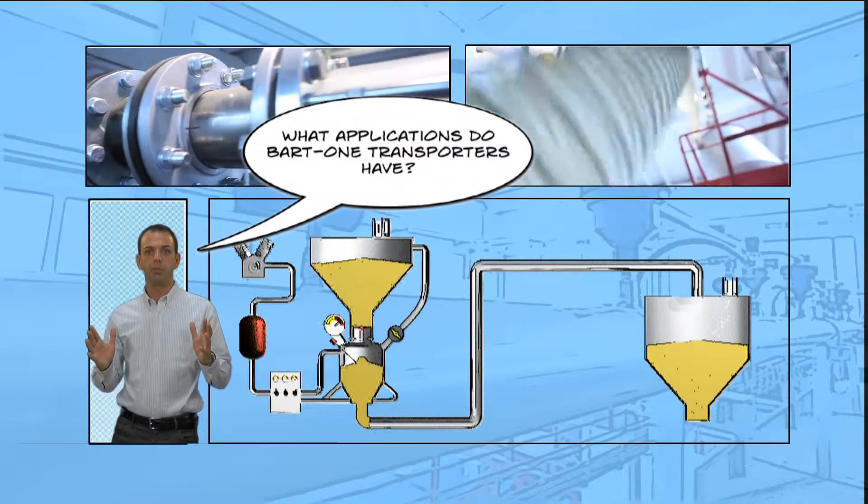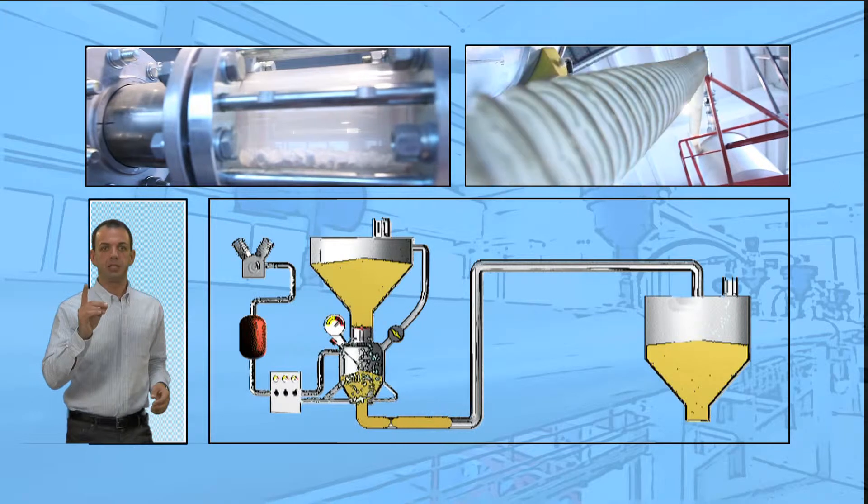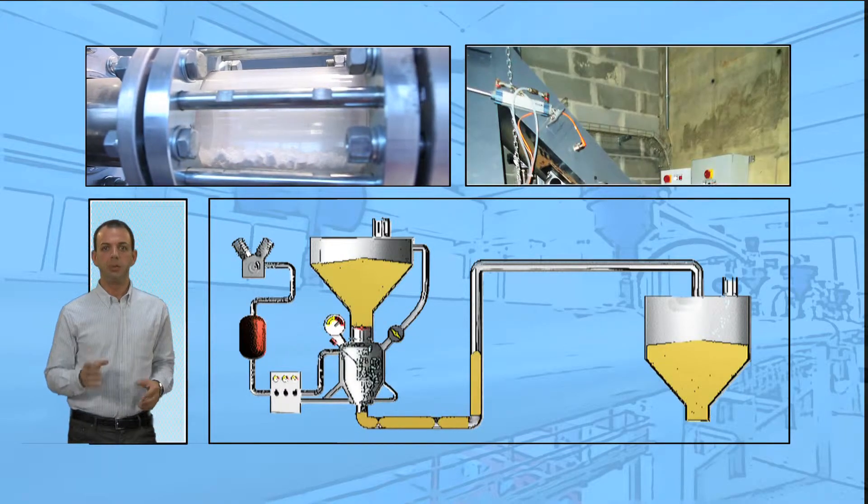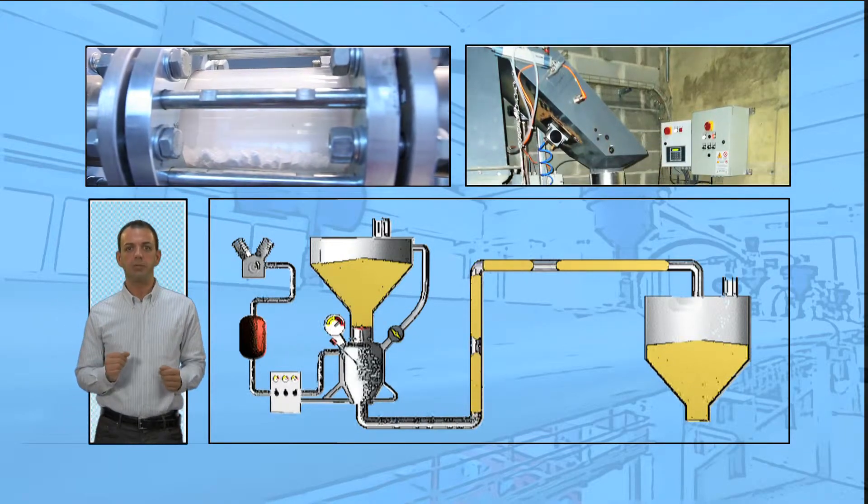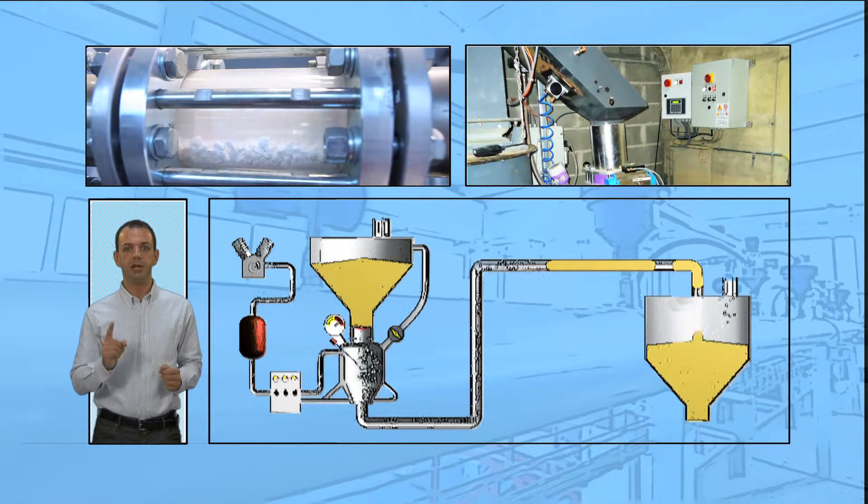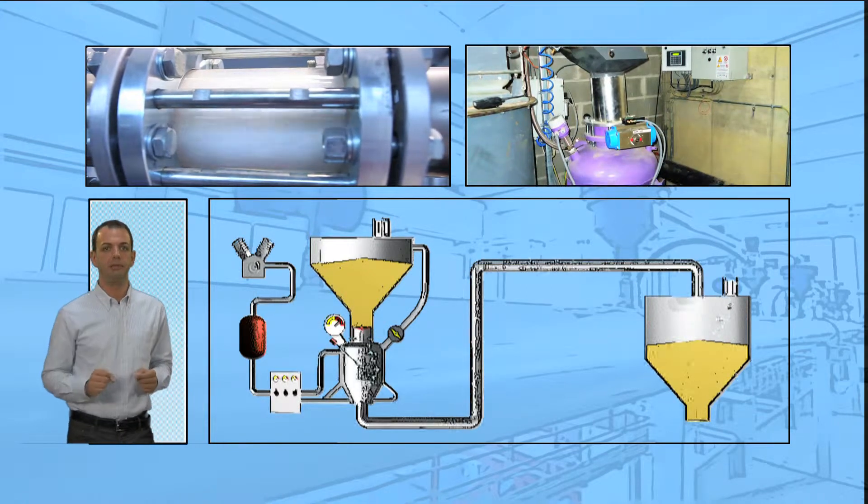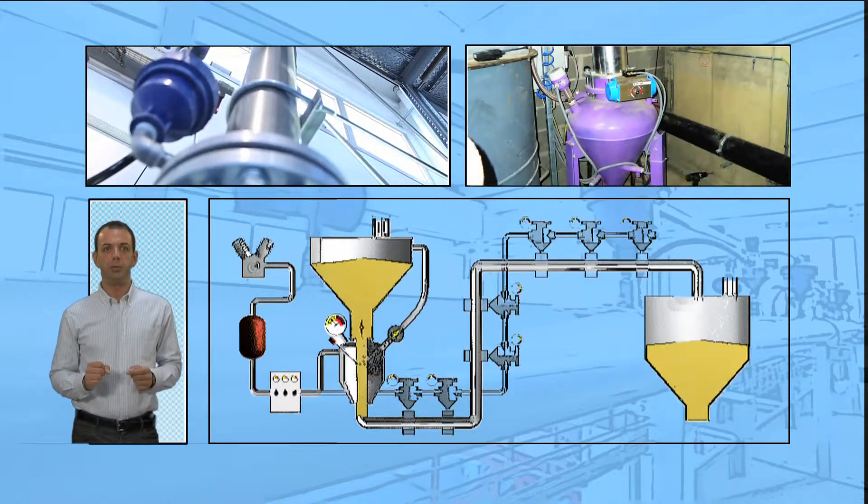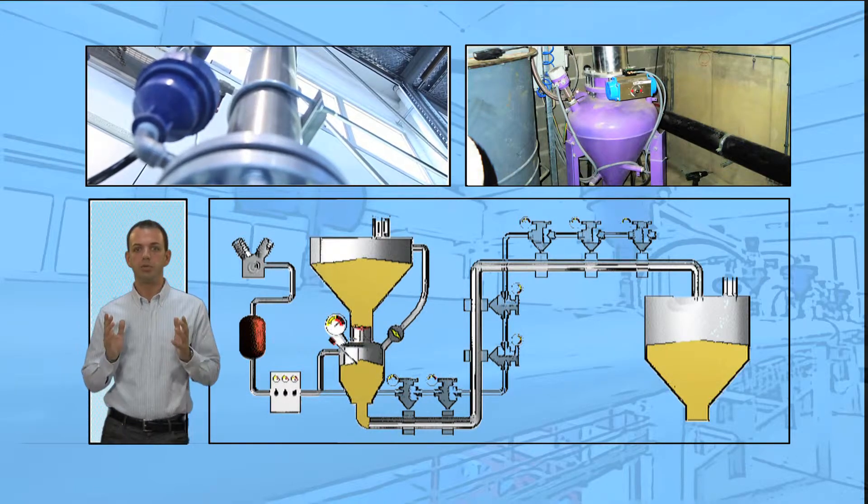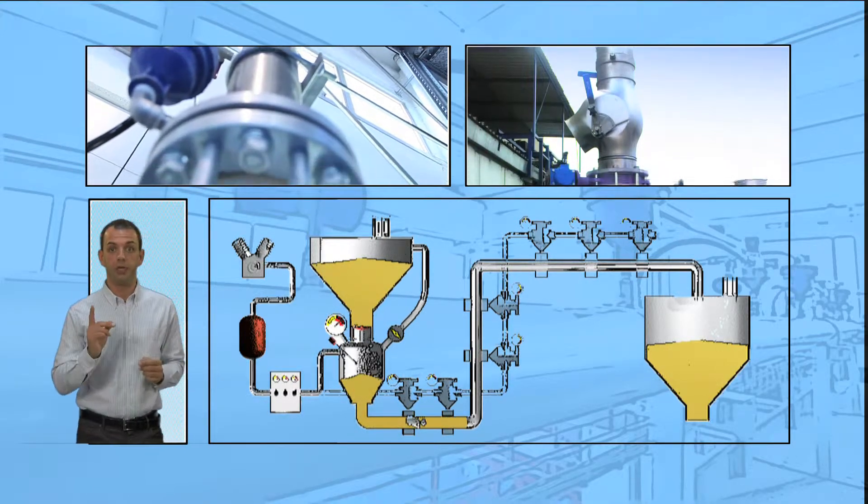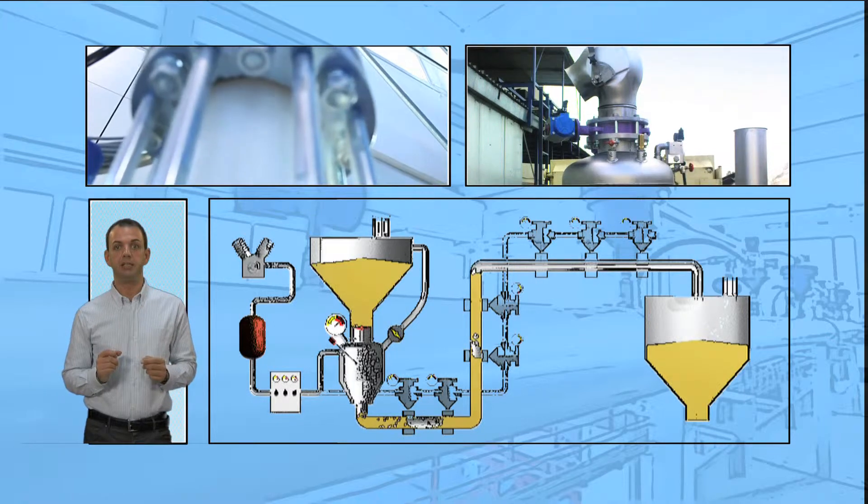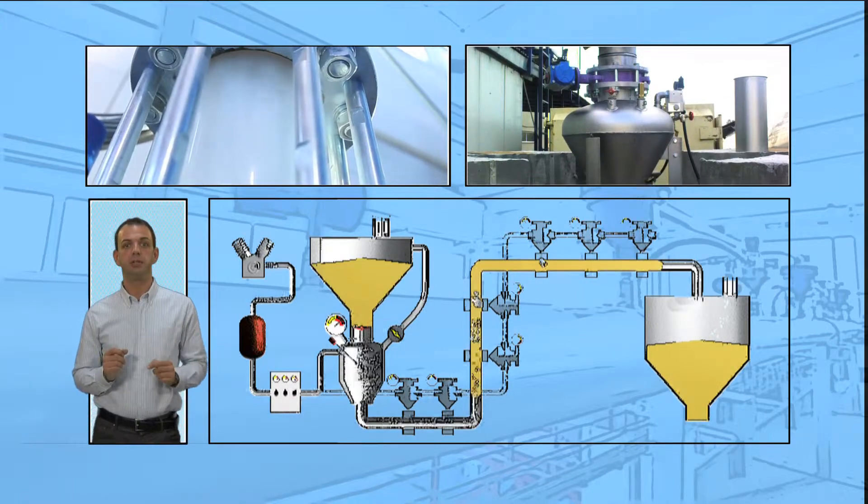What applications do BART 1 transporters have? Designed for standard transport, BART 1 vessels are also suitable for full pipeline conveying of fragile and abrasive materials and mixtures. The full pipeline method provides greater control of the transport cycle, which is fundamental in order to preserve the integrity of delicate products during transport to their destination.